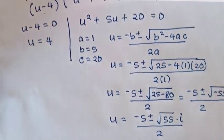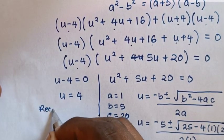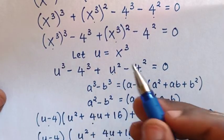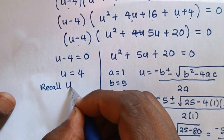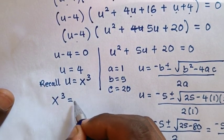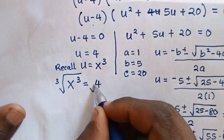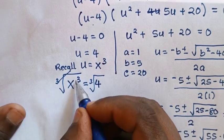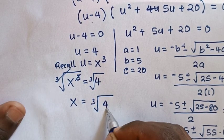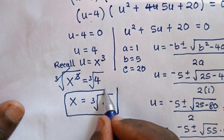To find x from the first case, we recall that u equals x³. Comparing u equals 4 with x³, we get x³ equals 4. Applying the cube root to both sides, the cube root cancels the cube, giving x equals the cube root of 4, or equivalently 4 to the power of one-third. This is our final answer.